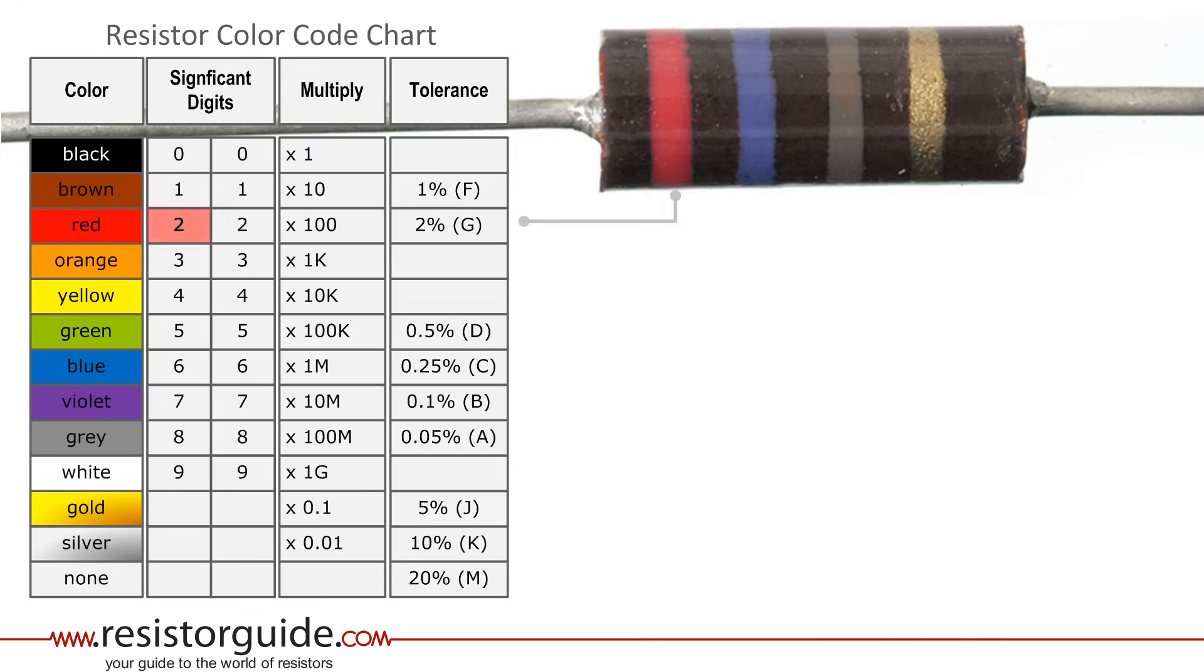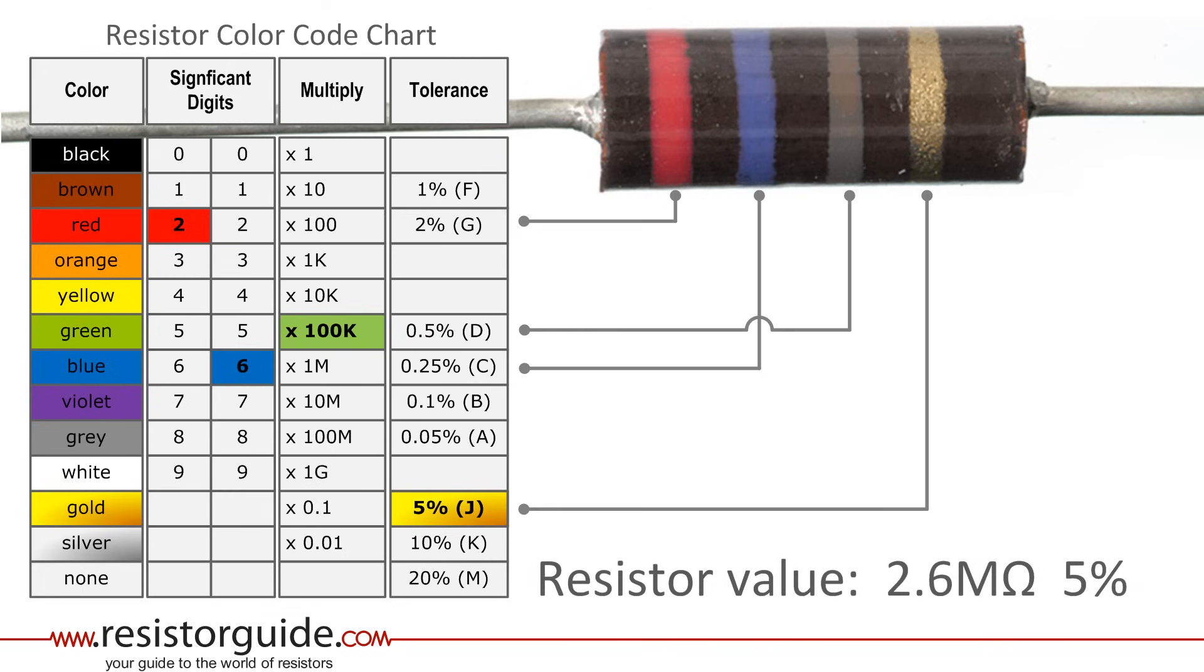Using the chart, we see that the first red band has a value of 2. The second blue band is 6. The third band is gray which means a multiplication factor of 10,000. The golden fourth band means a tolerance of 5%. We know that the resistor has a value of 2.6 mega ohms with a tolerance of 5%.